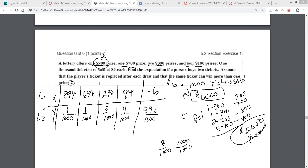So I'm typing in $894, $694, $294, $94, and negative 6. Not subtract 6, but negative 6. For the probabilities, I'm going to type in 1 divided by 1,000, 1 divided by 1,000, 2 divided by 1,000, 4 divided by 1,000, and 992 people lost divided by 1,000.